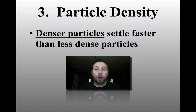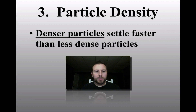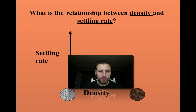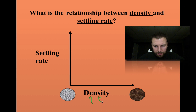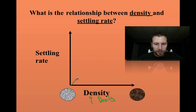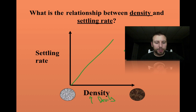We can also look at particle density. More dense particles settle faster than less dense particles. Graphing this relationship — as density increases, settling rate increases — it's a direct relationship.